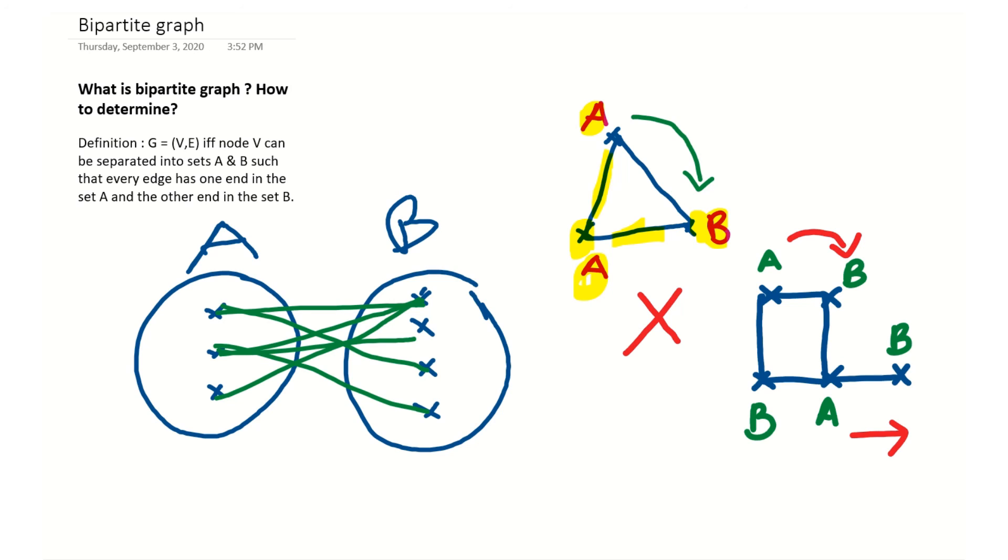Now we have marked all the nodes. If the last node we mark is in B, the corresponding edge is again in A. This means all the nodes can be divided into two sets A and B. Simply, the summary is this is a bipartite graph. That's it for today.